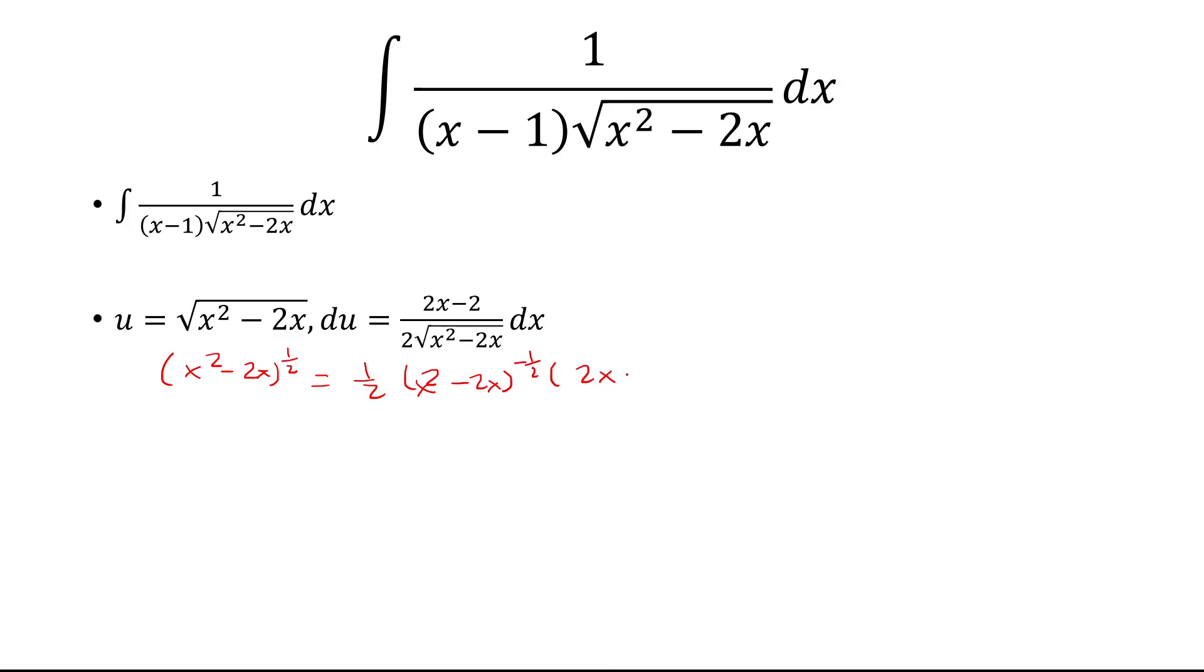And so, the 2x minus 2 goes on the top. We have the 1 half, so 2 on the bottom, with the square root of x squared minus 2x.